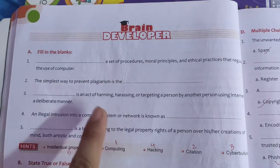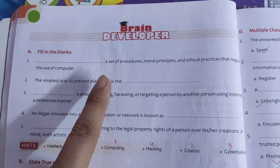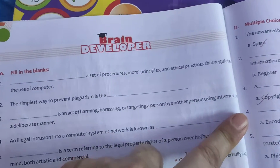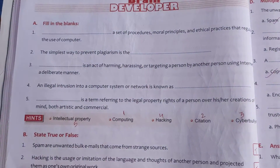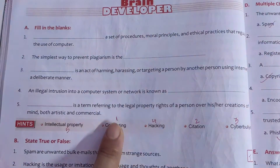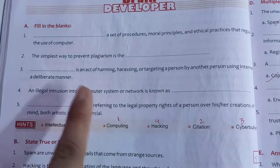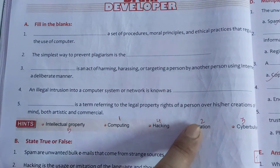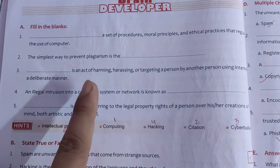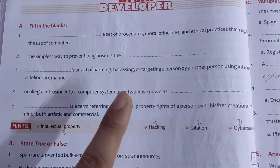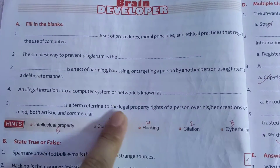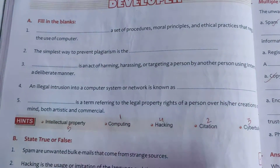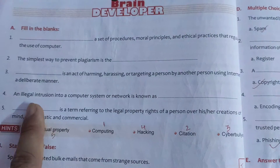Computer ethics is a set of procedure, moral principles, and ethical practices that regulate the use of computing. Cyberbullying is an act of harming, harassing, or targeting a person by another person using the internet in a deliberate manner.